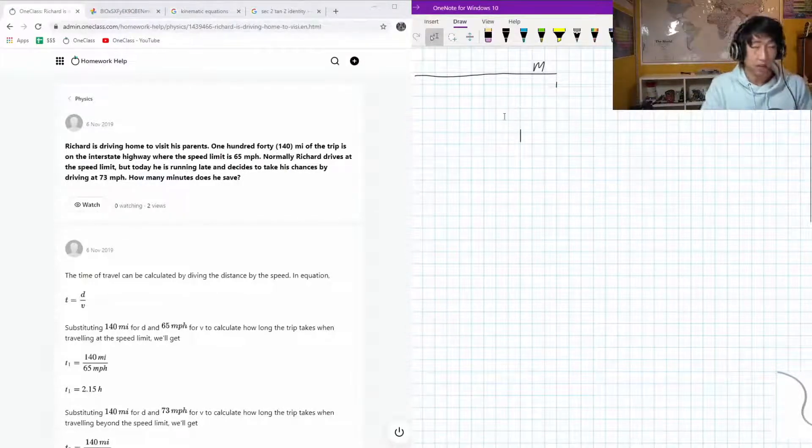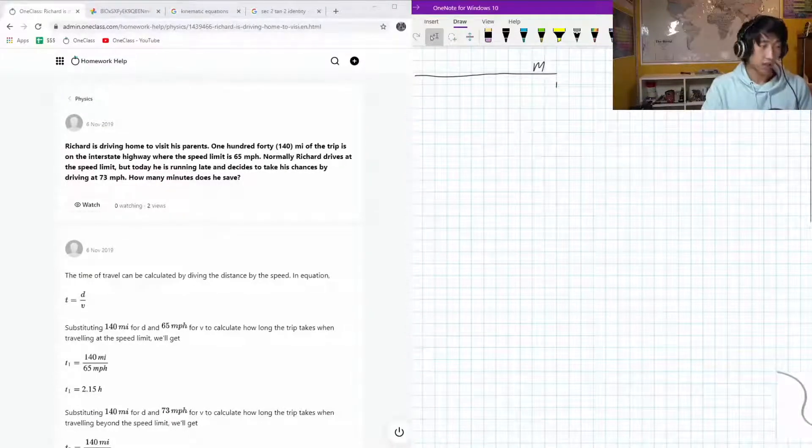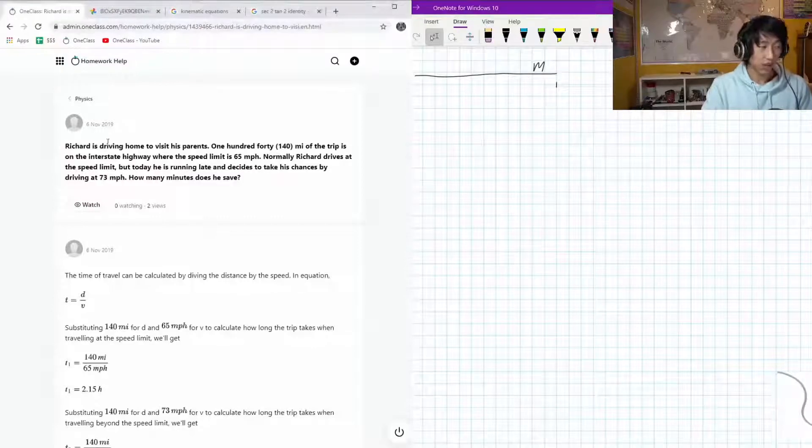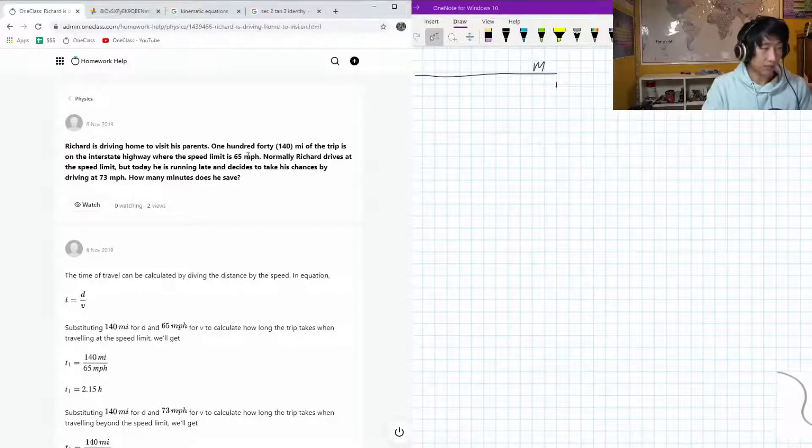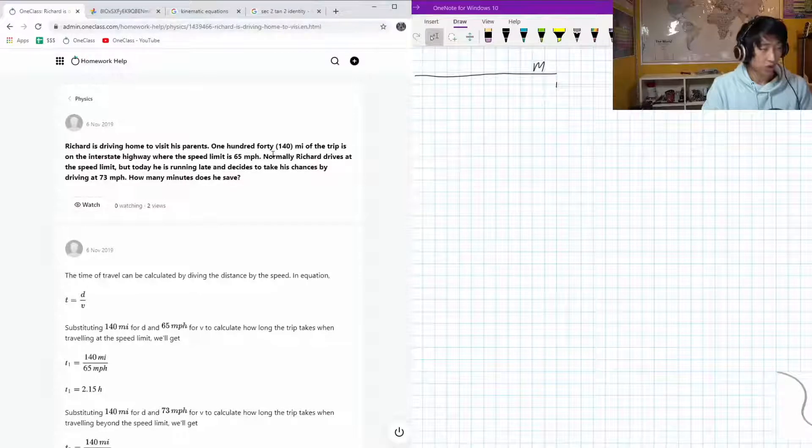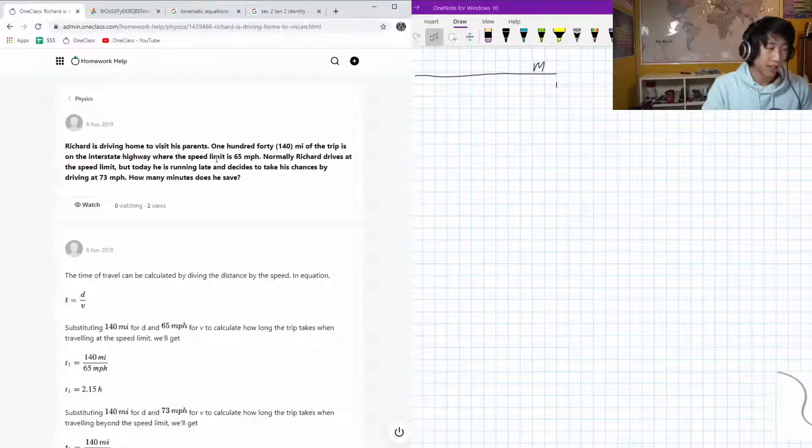Okay, so here we have the next question on the menu today. It's presenting the situation: Richard is driving home to visit his parents. 140 miles of the trip is on the interstate where the speed limit is 65 miles per hour.